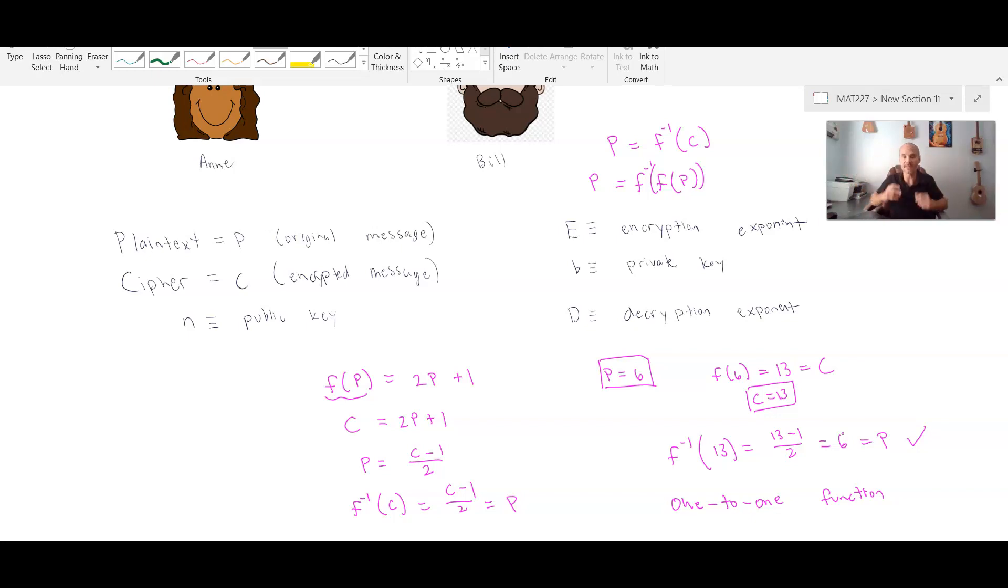And similarly, once you receive that encrypted message to decrypt it, to undo it, you should always end up with a unique original input value, or an original plain text value.